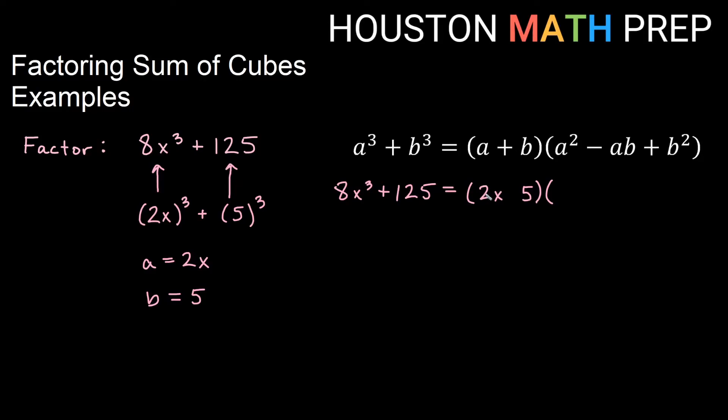So now the square of the front goes in front, so 2x times itself would give us 4x². Don't forget to square both the 2 and the x. The square of the back goes in back, so 5² would give us 25. And then we multiply in the middle, a times b in the formula, so 2x times 5 would give us 10x for our middle term in the long factor.